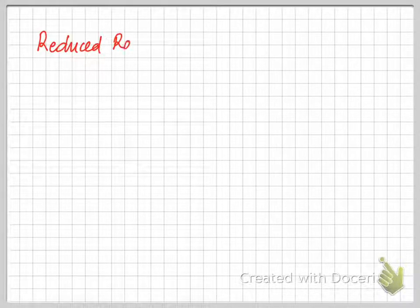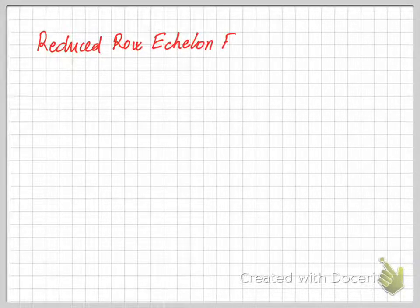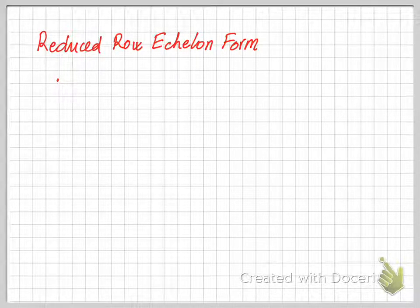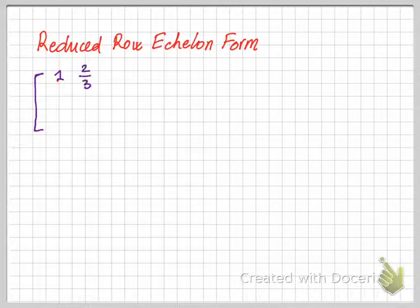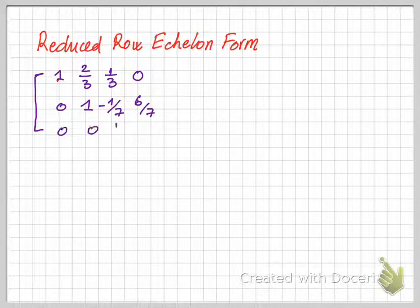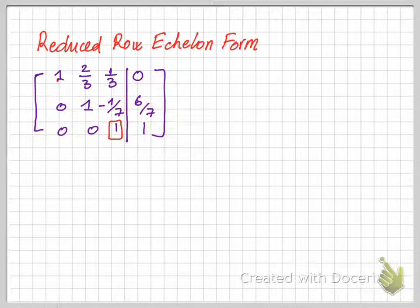This video shows how to transform a matrix in row echelon form into the reduced row echelon form. Looking at this 3 by 4 matrix, it is already in its row echelon form.